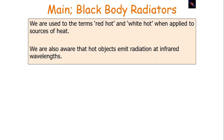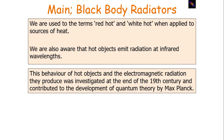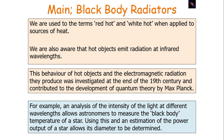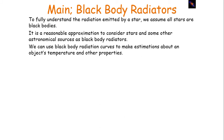We are used to the terms 'red hot' and 'white hot' when applied to sources of heat. Hot objects emit radiation at infrared wavelengths. This behaviour of hot objects and the electromagnetic radiation they produced was investigated at the end of the 19th century and contributed to the development of quantum theory by Max Planck. This is important when observing stars, as all the information we get about stars comes from the electromagnetic radiation they emit and receive. An analysis of the intensity of light at different wavelengths allows astronomers to measure the black body temperature of a star, and using this with an estimation of power output allows a star's diameter to be determined. To fully understand the radiation emitted by a star, we assume all stars are black bodies — a reasonable approximation.